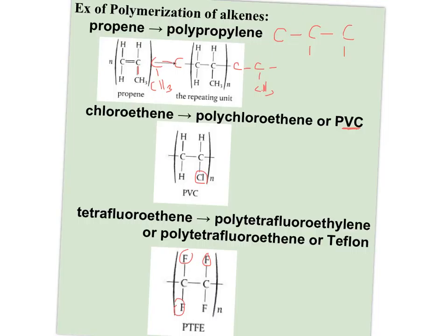Teflon is known as a non-stick cooking surface. Four fluorines make it very non-polar and very non-reactive — not sticky. Fluorines are highly reactive in a fluorine molecule, but once bonded, they form a very strong bond with carbon that very few things can displace. So it's very non-polar with very low van der Waals forces.